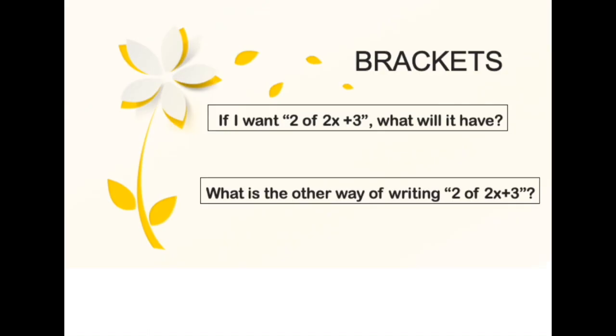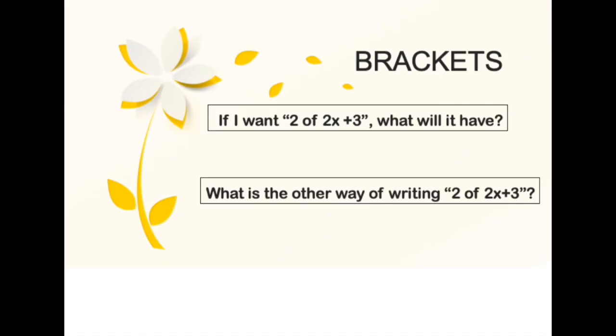So if we want 2 of 2x plus 3, what will it have? The word of here is actually meant to be multiplication. So it will be 2 of 2x plus 3, there will be 2 of 2x, so that will be 4, and 2 of 3 will be 6. So it will be 4x plus 6.